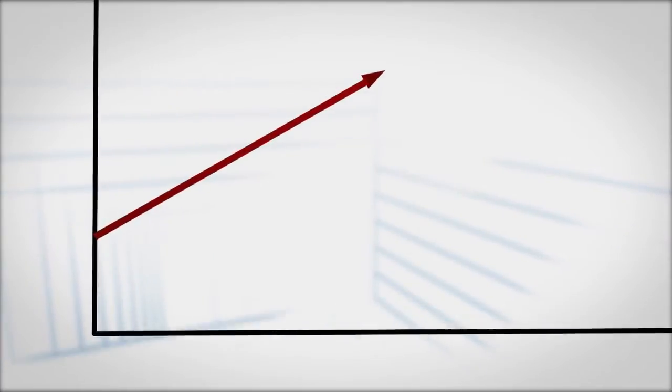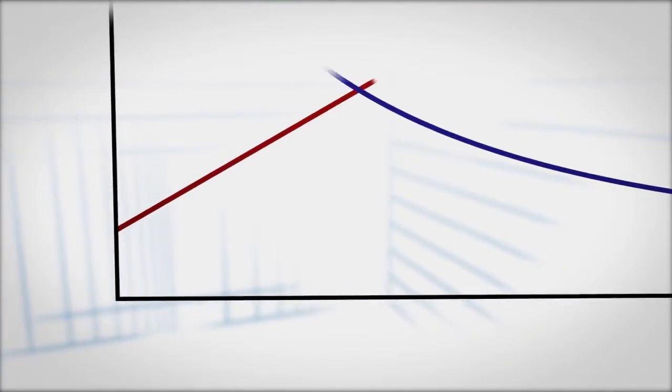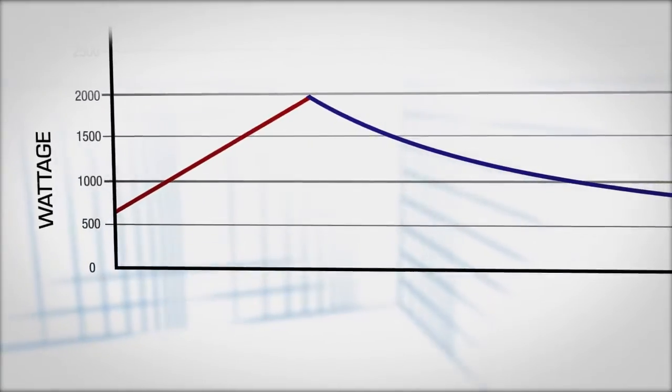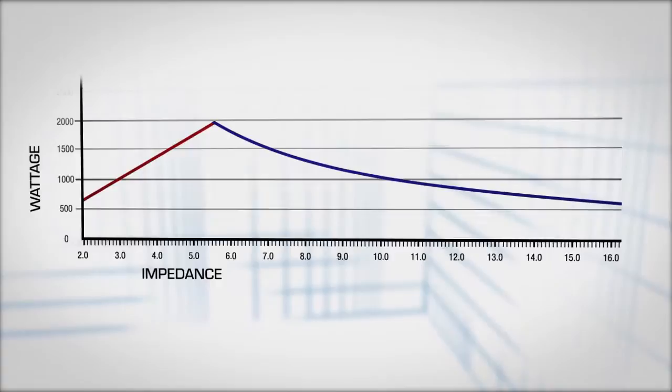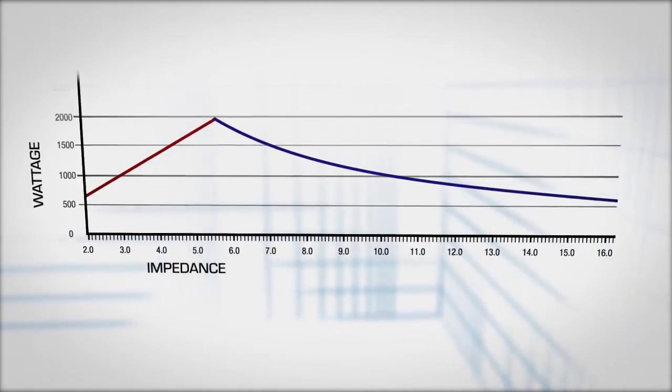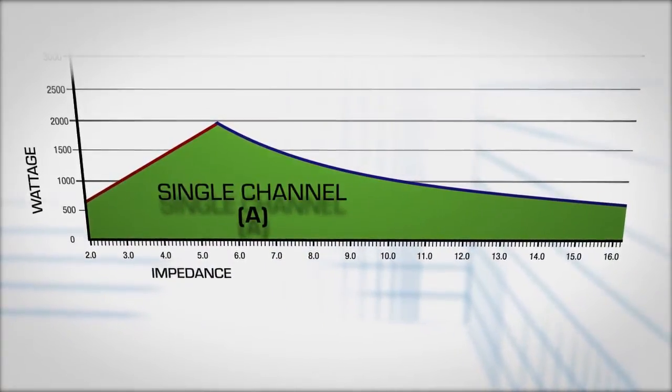All amplifiers are limited by two factors: current and voltage. The vertical axis on this graph represents the amount of power that can be delivered at varying levels of loudspeaker impedance, seen on the horizontal axis. This defines the deliverable power to a single audio channel.